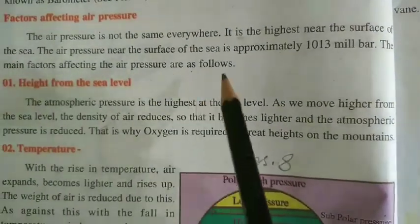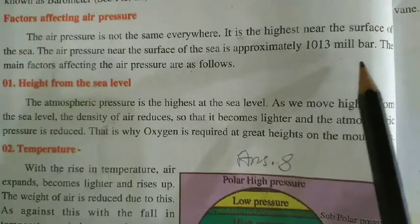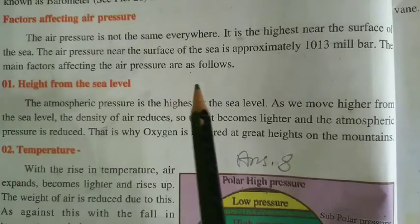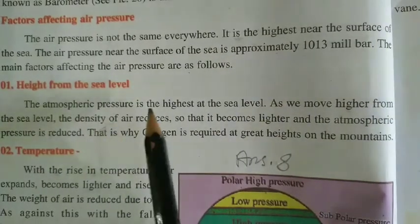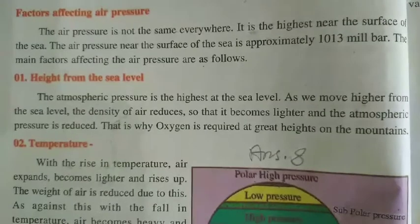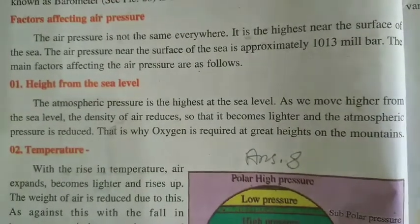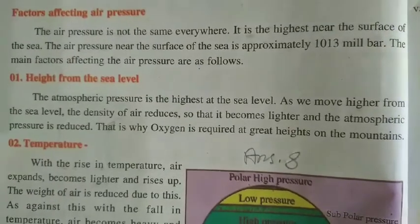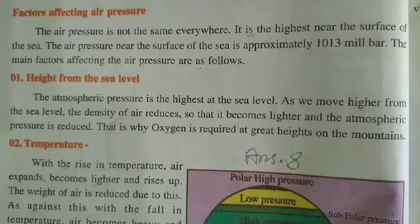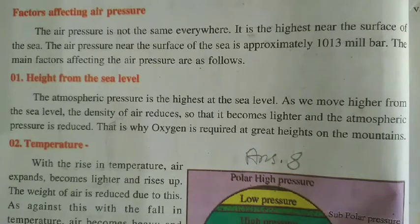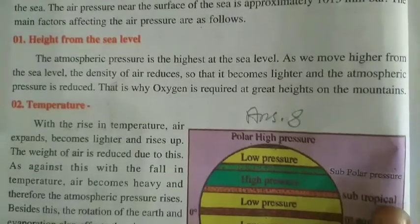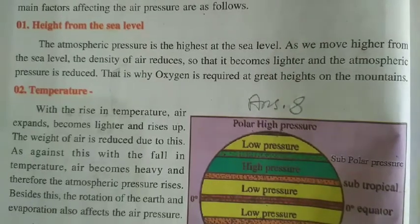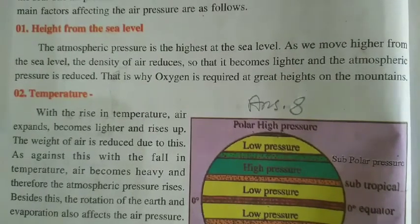The air pressure is not the same everywhere. It is the highest near the surface of the sea. The air pressure near the surface of the sea is approximately 1013 millibar. The main factors affecting air pressure are as follows. Air pressure is the highest at sea level.